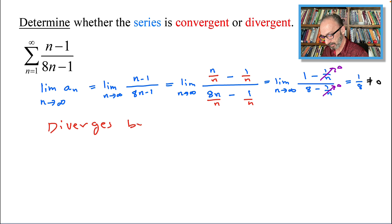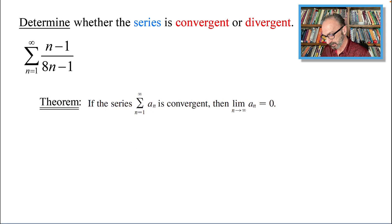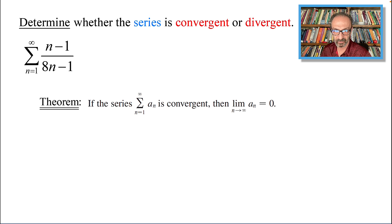By the Test for Divergence, let's go over this quickly as an overview. We have a theorem that says: if the series, the summation from n equals 1 to infinity of a sub n, is convergent, then the limit of a sub n equals 0.